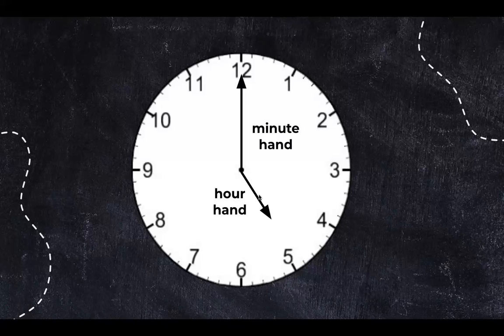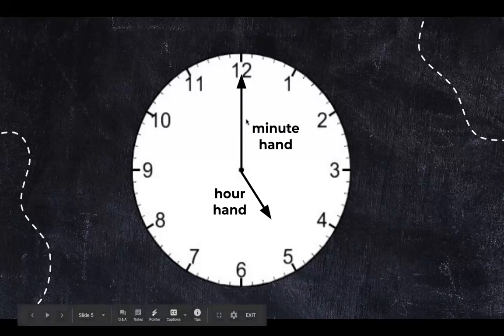The hour hand is short and it moves the least. Each hour the hour just moves from one number to the other. But the long minute hand has to work hard and go all the way around the clock.